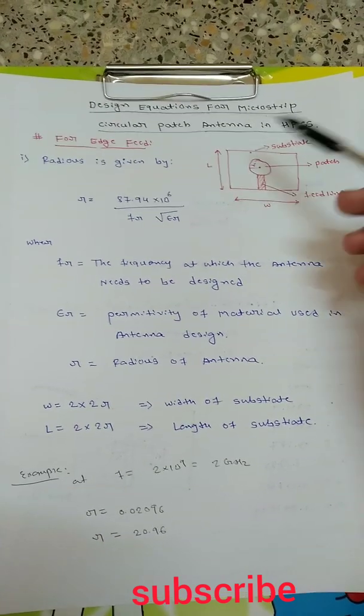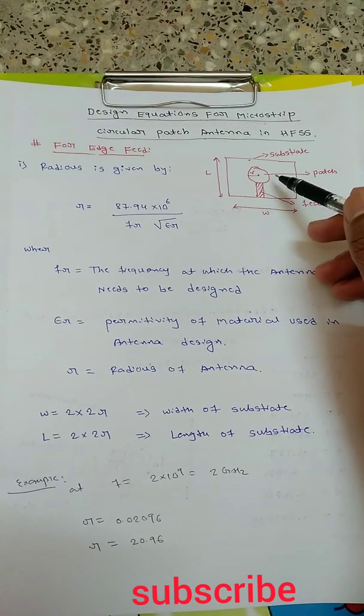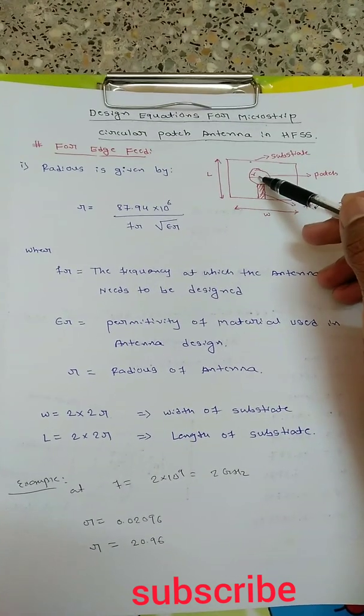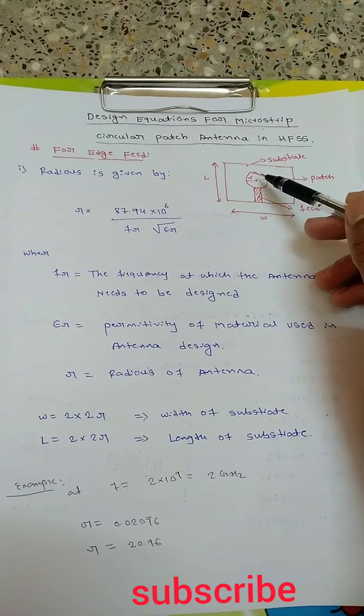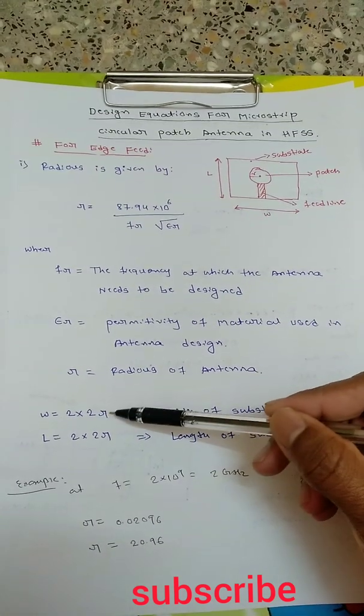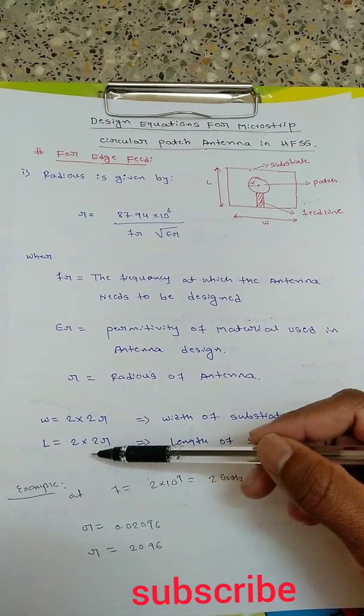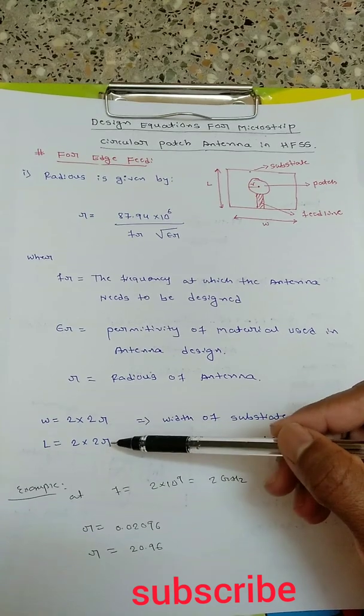Let's see. The first one is edge feed. In edge feed, there will be a patch with radius r at the center of the substrate. The substrate will have size 2 x 2r width and 2 x 2r length, where r is the radius of the patch.